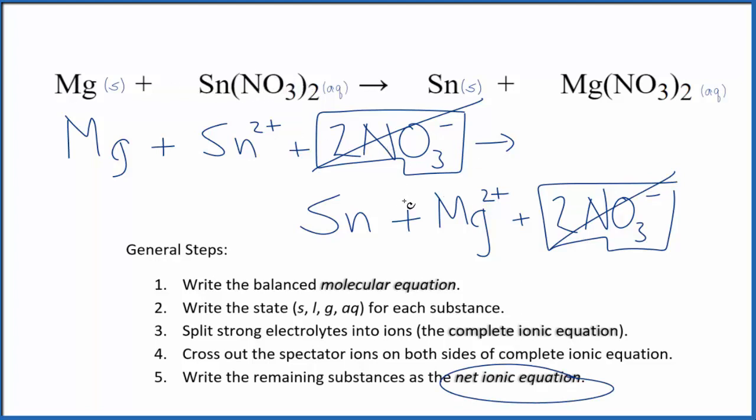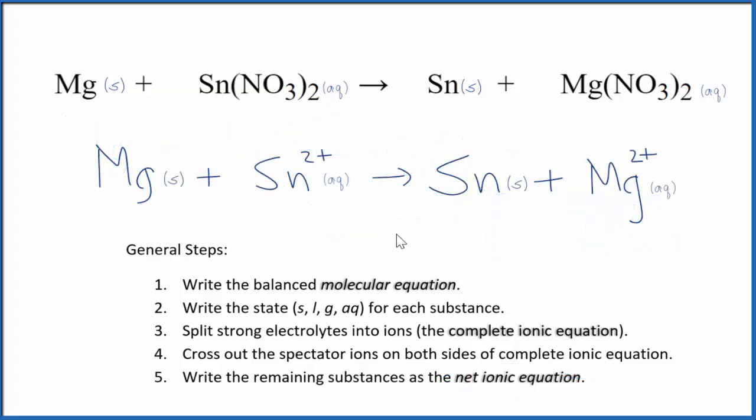So I'll clean this up and write the states. We'll have our net ionic equation. So this is the balanced net ionic equation for magnesium plus tin(II) nitrate.